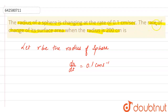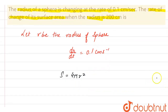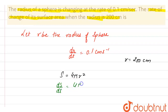Now, the question says to find the rate of change of its surface area. We know that the surface area of any sphere whose radius is r is 4πr². We are representing surface area by capital S. So the surface area S = 4πr², and here we have given that radius is 200 cm. If we differentiate this with respect to t on both sides, we can write ds/dt equals 4π — since 4π is constant, it stays as is — and the differentiation of r² with respect to t is 2r(dr/dt).